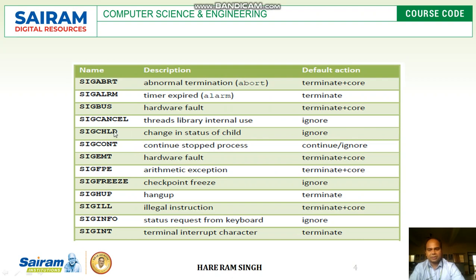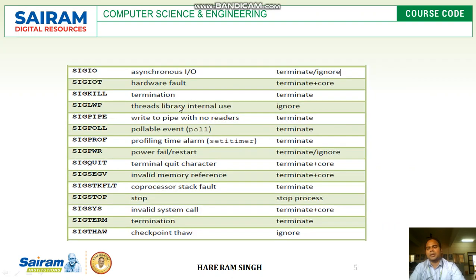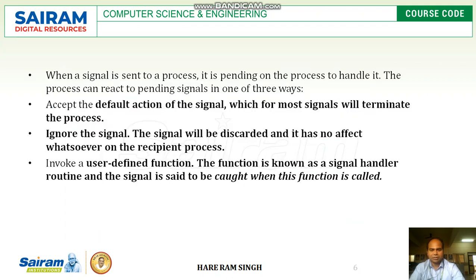SIGCHLD indicates a change in status of a child. SIGCONT is used to continue a stopped process. SIGEMT is a hardware fault. SIGFPE is an arithmetic exception — for example, if any number is divided by zero. SIGHUP means hangup. SIGILL means illegal instruction. SIGINFO is a status request from keyboard. SIGINT is the terminal interrupt character. SIGIO is asynchronous input/output. SIGIOT is a hardware fault. SIGKILL means termination. Many such signals are available in Unix.